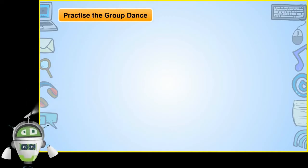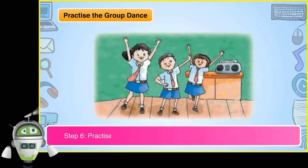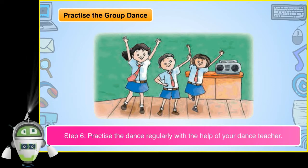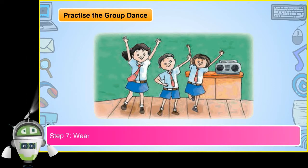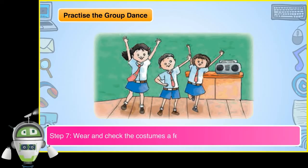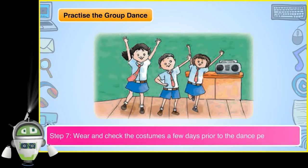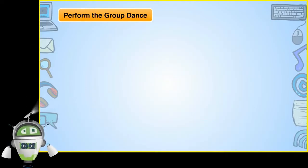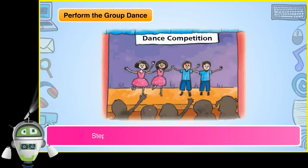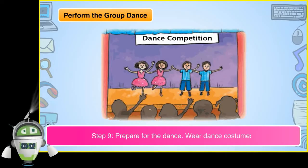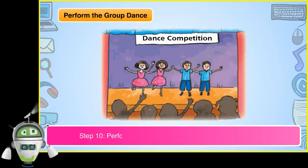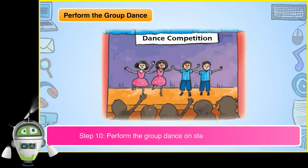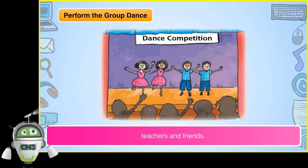Practice the group dance: Step 6 — Practice the dance regularly with the help of your dance teacher. Step 7 — Wear and check the costumes a few days prior to the dance performance. Step 8 — Do a dress rehearsal. Perform the group dance: Step 9 — Prepare for the dance and wear dance costumes. Step 10 — Perform the group dance on stage in front of parents, teachers and friends.